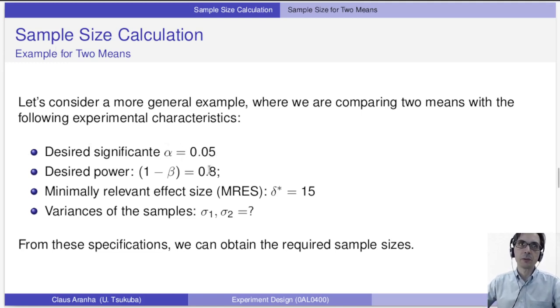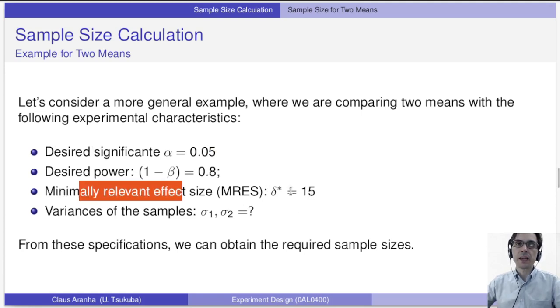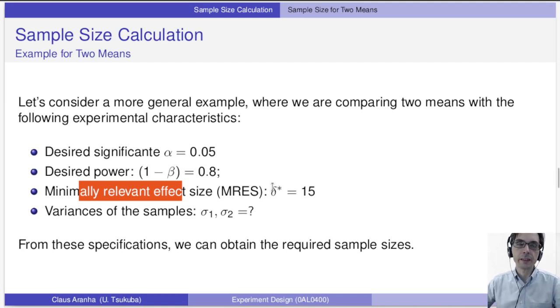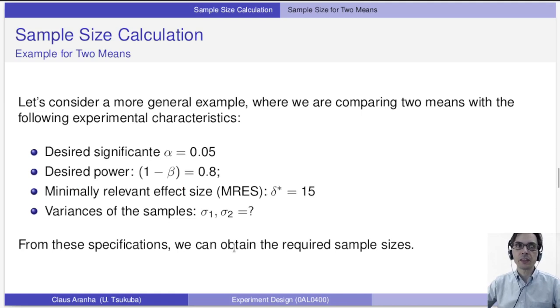The effect size — the difference between the two samples we want to detect — is at least delta equal to 15, but we don't know the variance of the samples. So how do we calculate the sample size in this case?